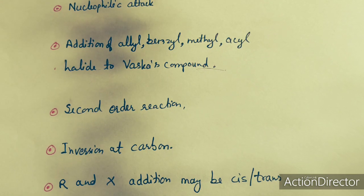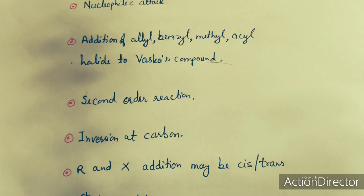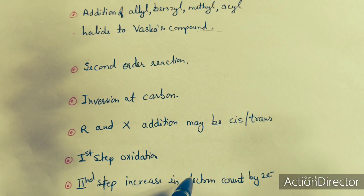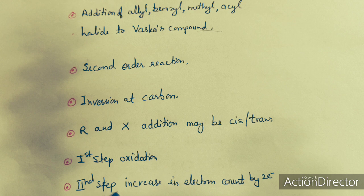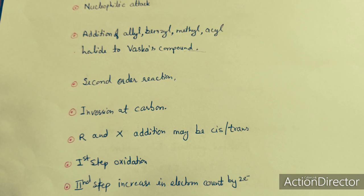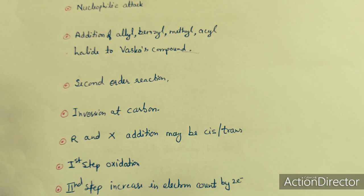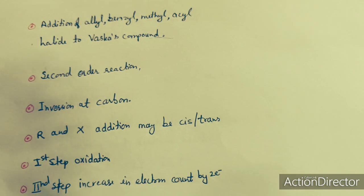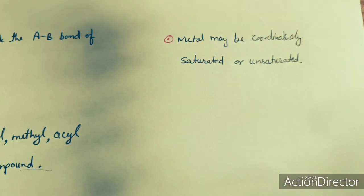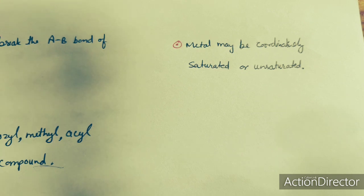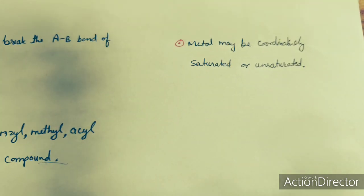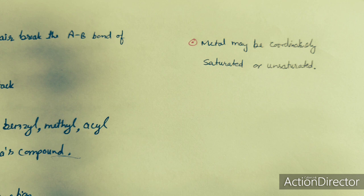The first step is oxidation and the second step is addition. In the second step, the electron count increases by 2, because the iodide ion can easily donate its electron pair to the metal center. The metal may be coordinatively saturated or unsaturated, but the metal center must be electron rich. These are the key points to remember for the SN2 mechanism.